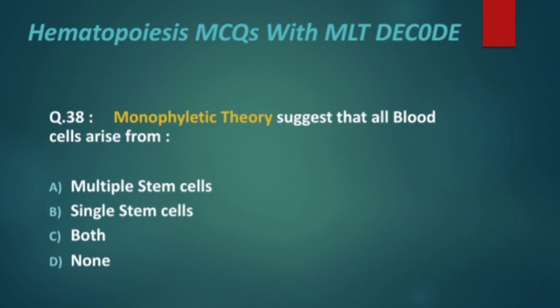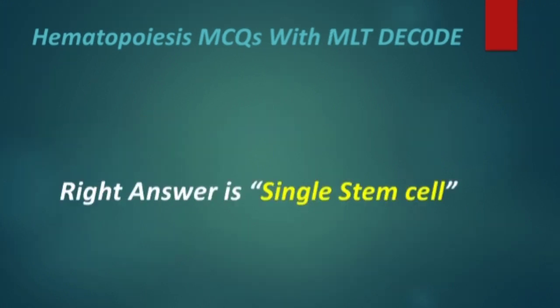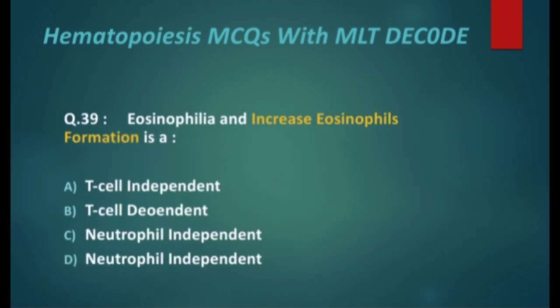Next: monophyletic theory suggests that all blood cells arise from — options are: multiple stem cells, single stem cells, both, and none. The right answer is single stem cell.